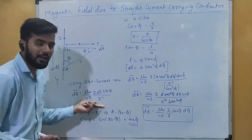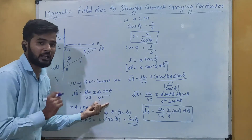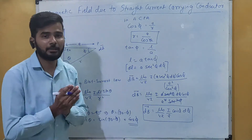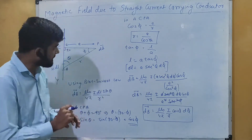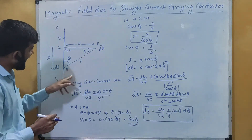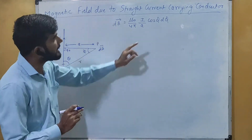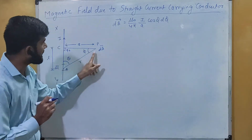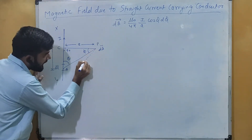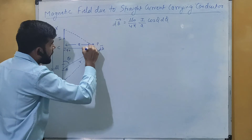This is the value of the magnetic field in terms of phi for a small element dL. But when we have a straight current carrying conductor we need to calculate the total magnetic field for the whole conductor, so we need to integrate it in terms of phi. We consider that from point P, one end of the conductor makes an angle phi₁ and the other end makes an angle phi₂.